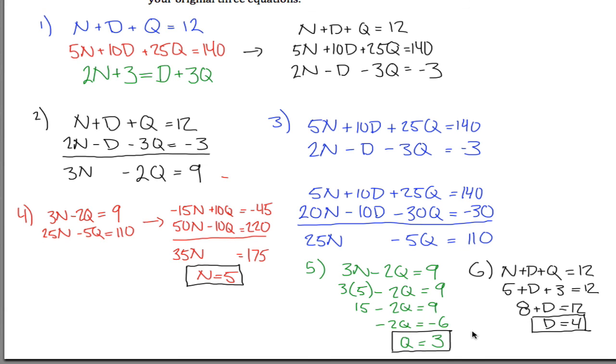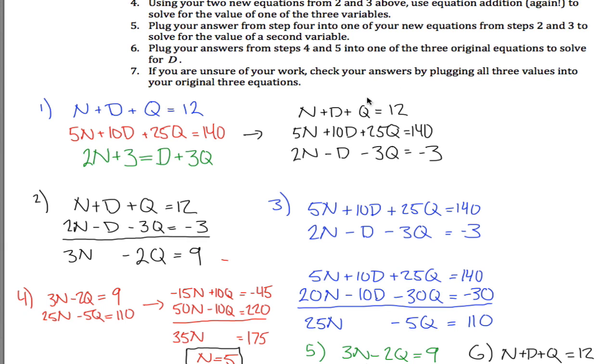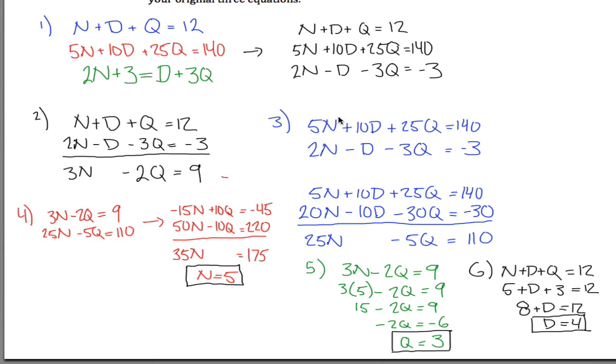5 nickels, 4 dimes, 3 quarters, I think step 7 says if you're unsure you can check your answers, I'm pretty sure, I think I'm good with this. So I guess I can just leave step 7 out, maybe I'll say 7, no thanks, no thanks, I'm confident.